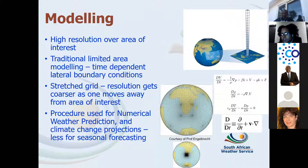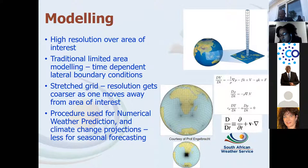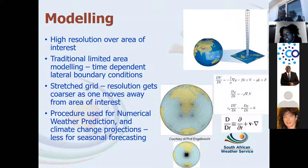Weather and climate models work in a similar way — they solve these types of equations. To get high resolution over our area of interest, we use regional modeling: you run a model only over the area you're interested in at high resolution, and rely on a global model with coarser resolution to provide lateral boundary conditions. We update those every three hours now, previously every six. This procedure is used for weather forecasting and climate change projections, but not much for seasonal forecasting because there's not much skill from dynamical downscaling at that timescale.